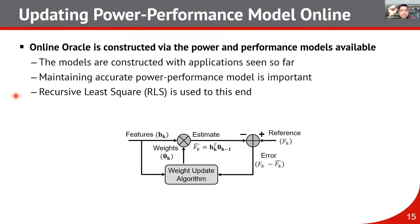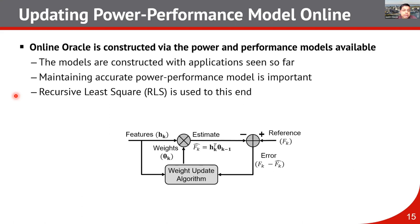Models constructed with previously seen applications may not provide good estimation for new applications coming online. Since we rely on the power-performance model to get the oracle online, it is very important to maintain an accurate model, and we do so by updating it online with a recursive least squares-based approach.